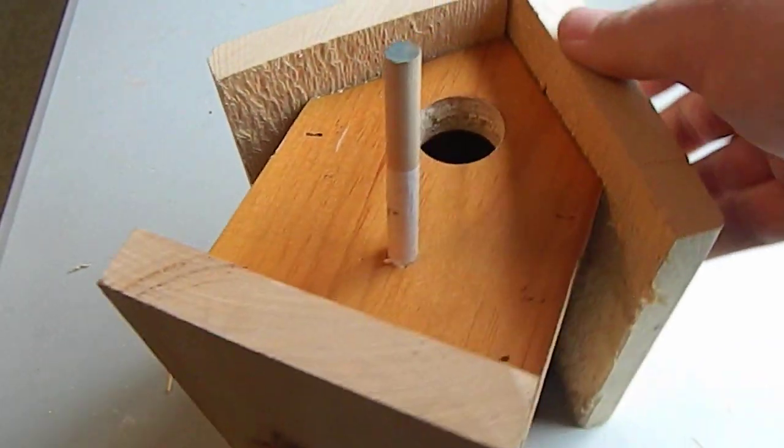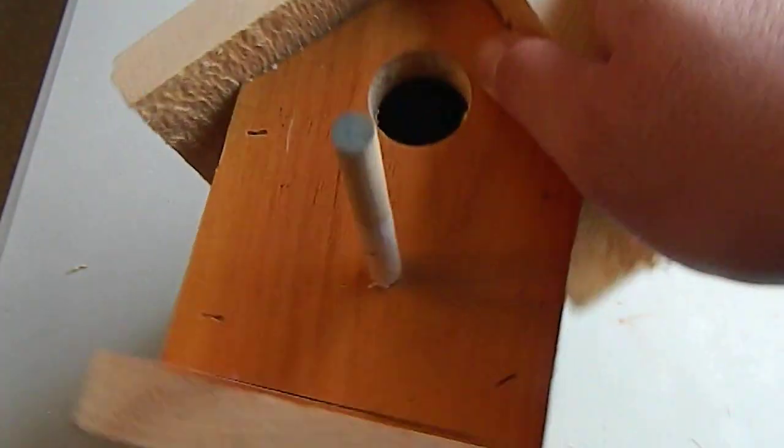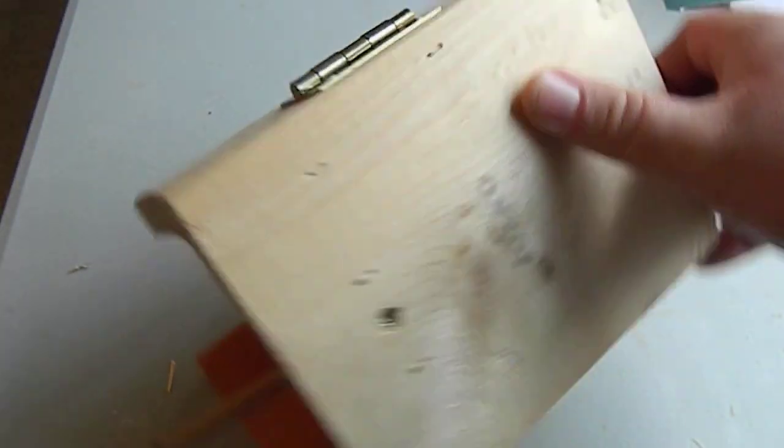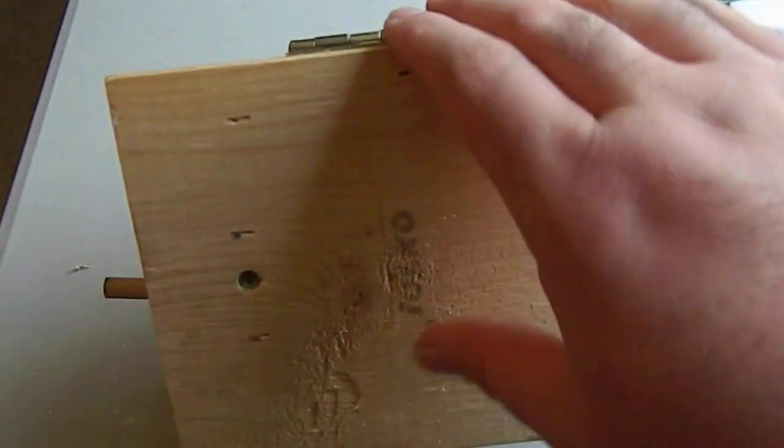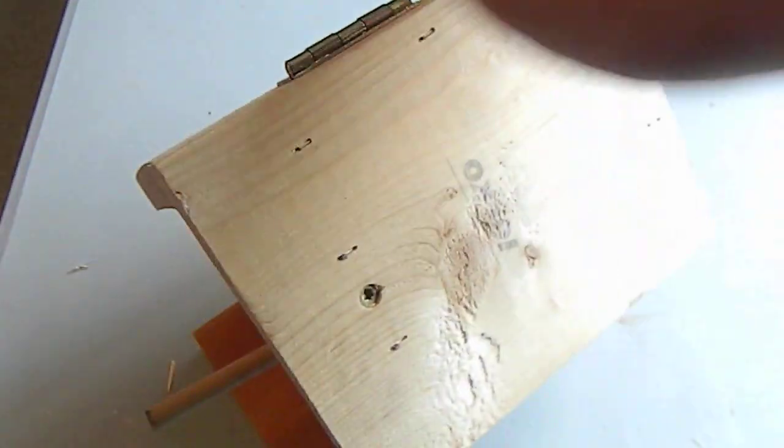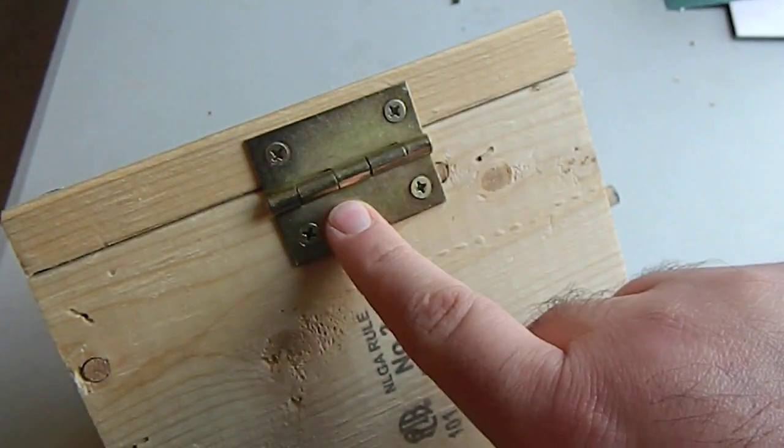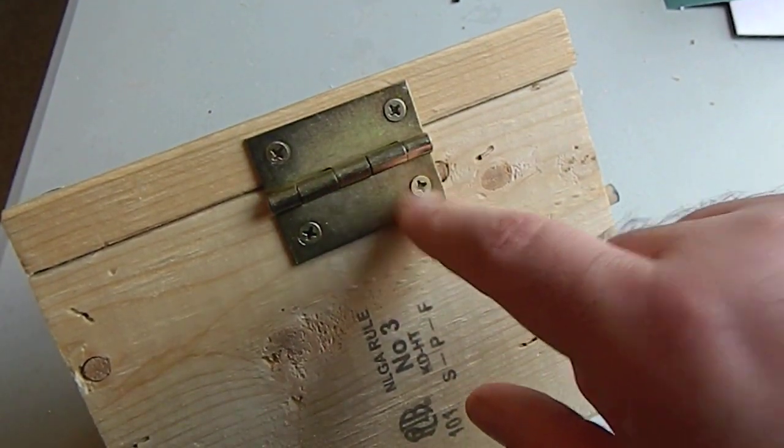These are just kind of junky end pieces that have been sitting around. This one here's got a crack in it. So I did screw it in in a couple places just to help flatten it out a little bit because it was bowed so much. But the rest is just all finishing nails and a very simple dollar store hinge.